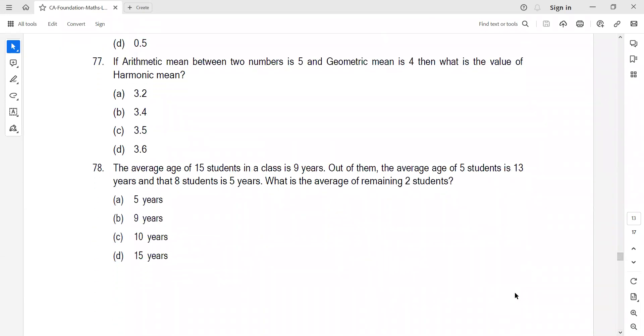Arithmetic mean of two numbers is 5, geometric mean is 4. G square equals AM into HM. So 4 square equals 5 into H. H equals 16 by 5, which is 3.2. Option B.